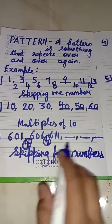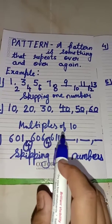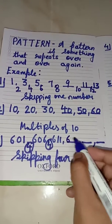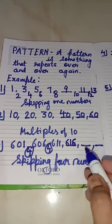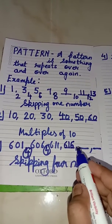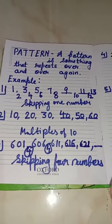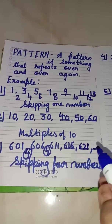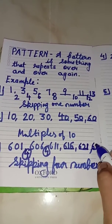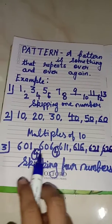So again we will follow this pattern. After 611 comes 612, 613, 614, and 615 — we skip 4 numbers and write 616. Again skip 4 numbers: 617, 618, 619, 620 — then we write 621. Again skip 4 numbers: 622, 623, 624, 625 — so we write 626. Here we are skipping 4 numbers and we have completed this pattern.